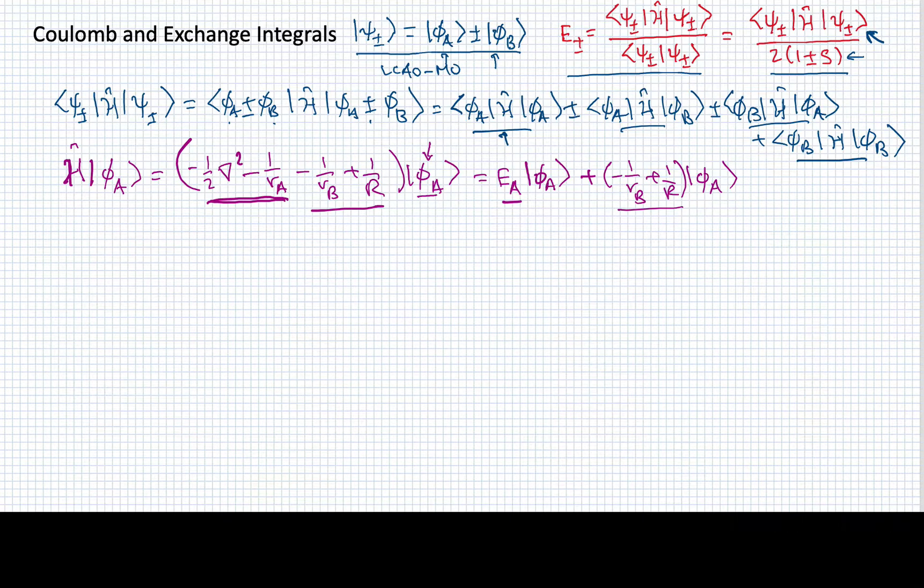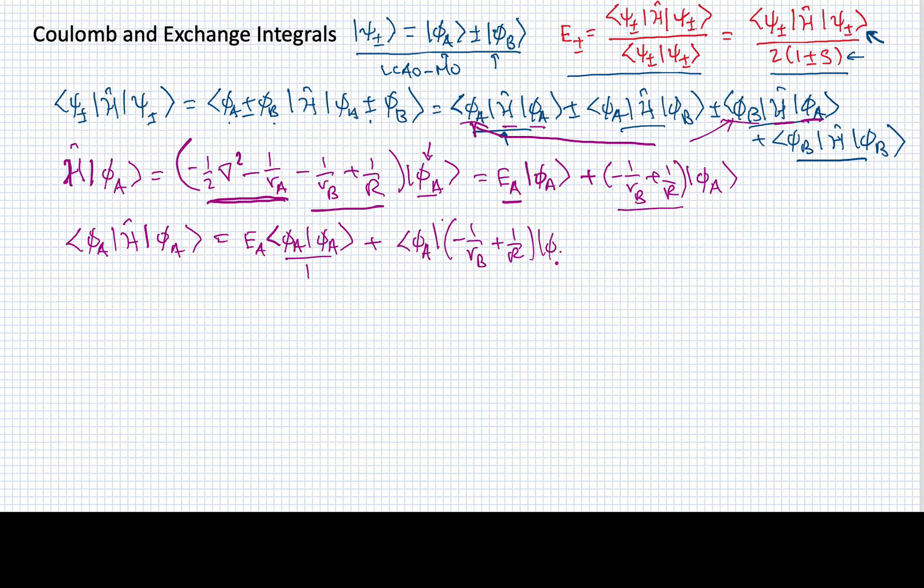When I evaluate Hamiltonian on phi A, I'm doing that also over here. But you'll notice that I have two different functions here. Here I'm closing it with phi A and here I'm closing it with phi B. So let's evaluate what each of those give us. When I close it with phi A, when I'm evaluating this particular number, I'm going to have phi A operating on this, which is just going to give me E A times the inner product of phi A with itself, which since it's normalized, is just one.